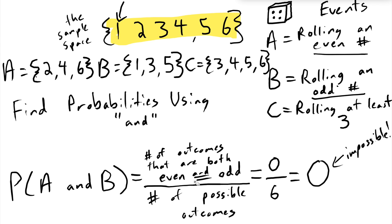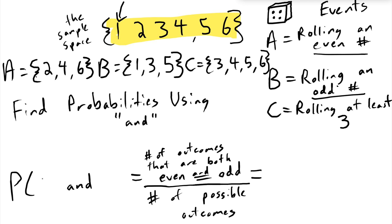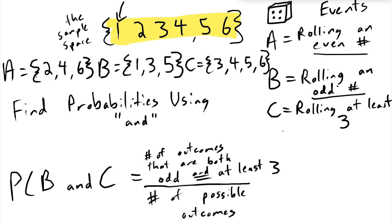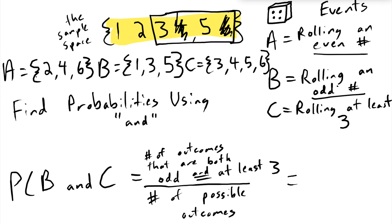The next is the probability of B and C — outcomes that are odd AND at least three. We need numbers that are at least three, and among those, only odd ones count. That gives us two outcomes over six possible outcomes. So the probability of B and C is two over six.